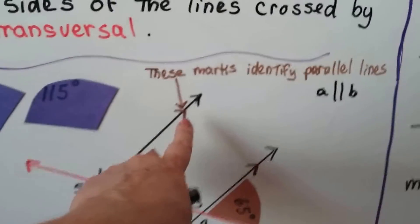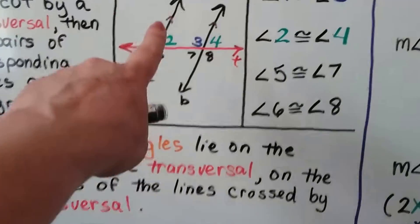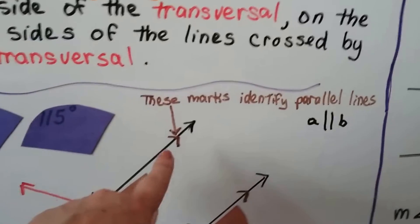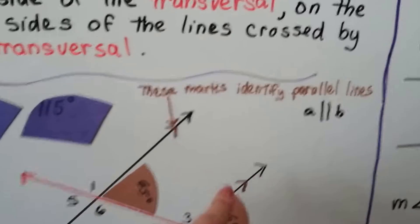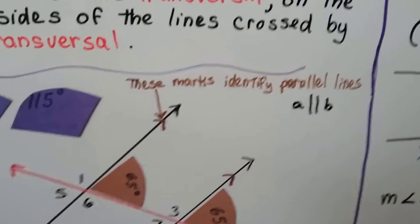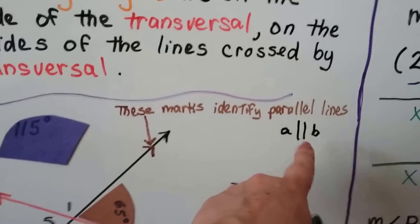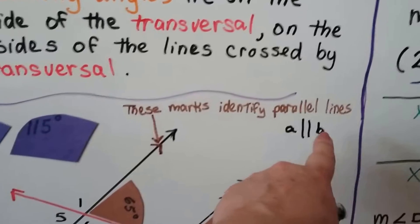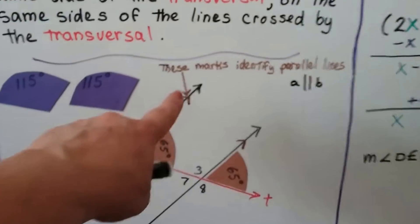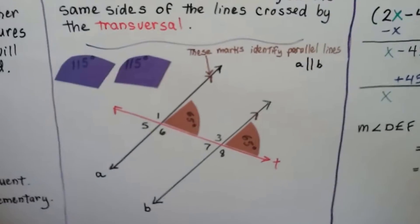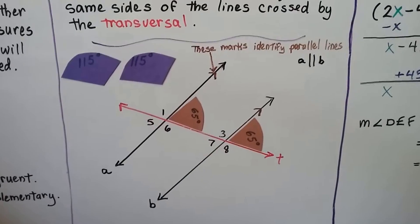If you notice, there are little marks on the diagram — there are little marks here and also up here. Those little marks tell us that these are parallel lines on the diagram. When we write it, we write A is parallel to B. But when you see those little marks on the diagram, that means those are the parallel lines.